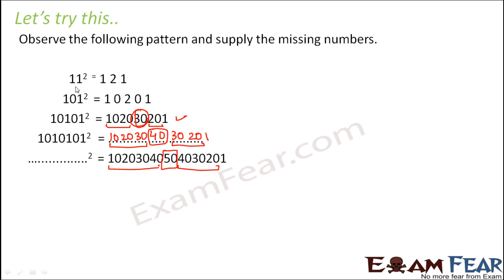Earlier it was 11, then it was 1, 0, 1. So what was the change? 1, 0 was inserted in between the two 1s. Next was 1, 0, 1, 0, 1. You see an extra 1, 0. From this step onwards, at every step this 1, 0 is an extra thing that is getting added.